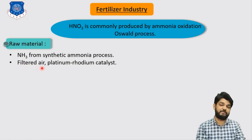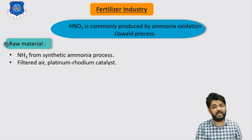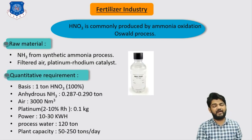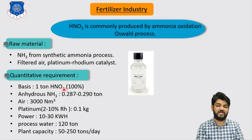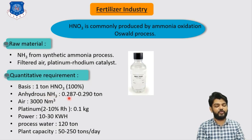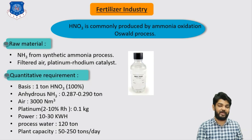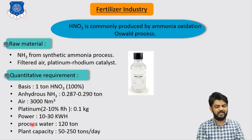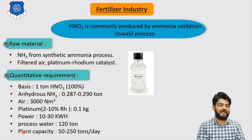Quantitative requirements to produce one ton of 100% nitric acid: anhydrous ammonia — 0.287 to 0.29 tons; air — 3000 normal cubic meters; platinum (with 2 to 10% rhodium) — 0.1 kg; power consumption — 10 to 30 kWh; process water — 120 tons. Plant capacity of 50 to 250 tons per day can be achieved.